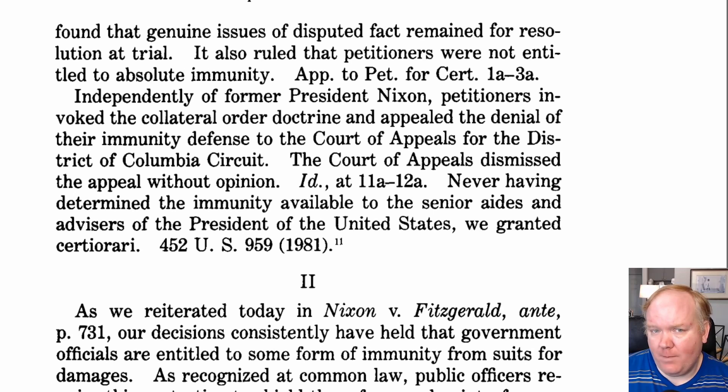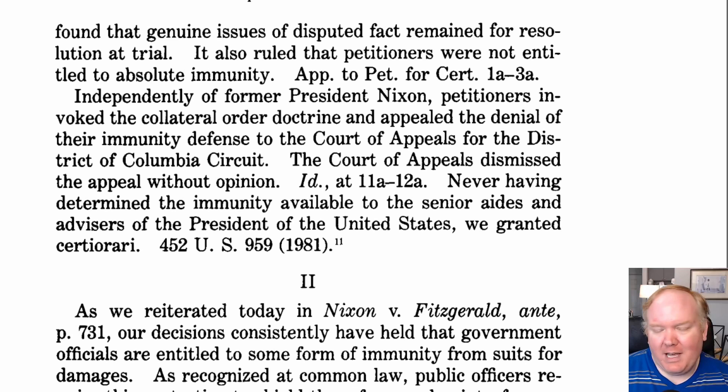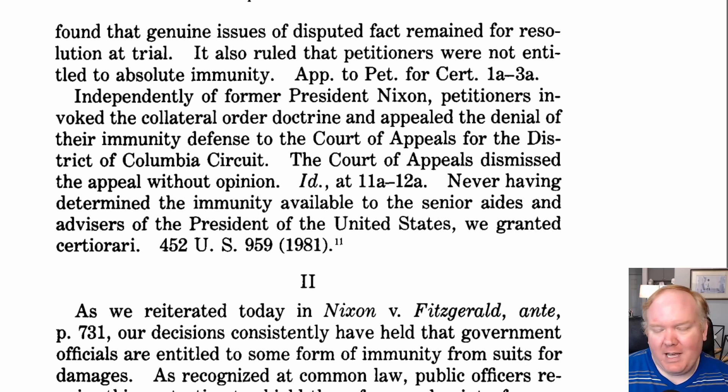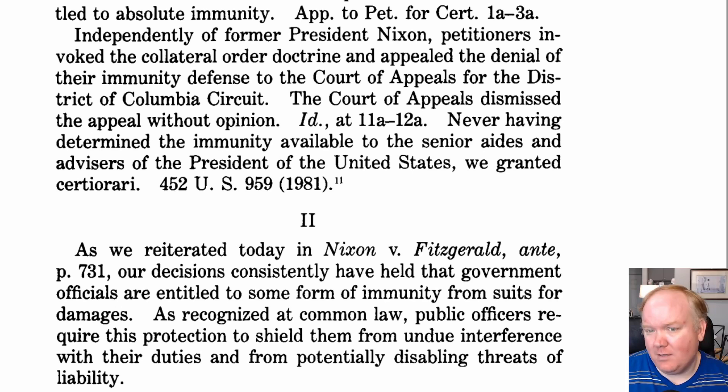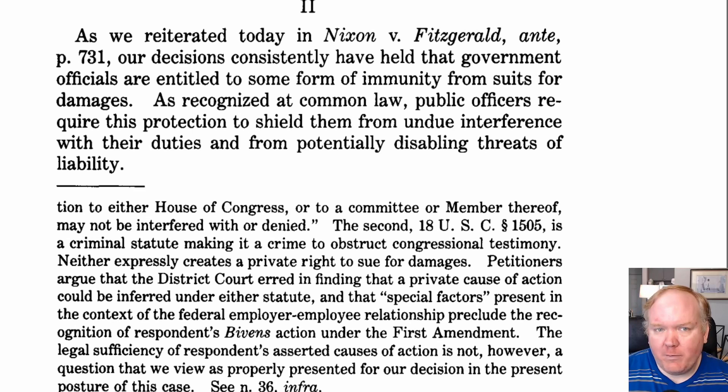The court found genuine issues of disputed facts that remain for resolution at trial. It also ruled petitioners were not entitled to absolute immunity. Absolute immunity is relatively rare — it's normally available for prosecutors and judges for their official acts. Petitioners invoked the collateral order doctrine and appealed the denial of immunity to the Court of Appeals for the District of Columbia, which dismissed without an opinion. The Supreme Court granted cert, as the question of what immunity is available to senior presidential aides had never been determined.